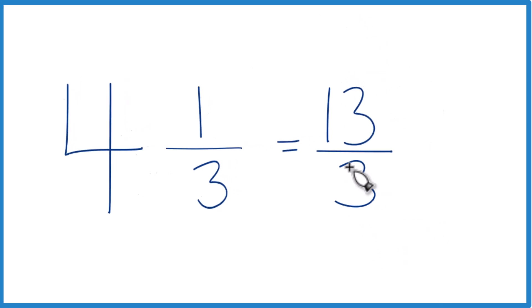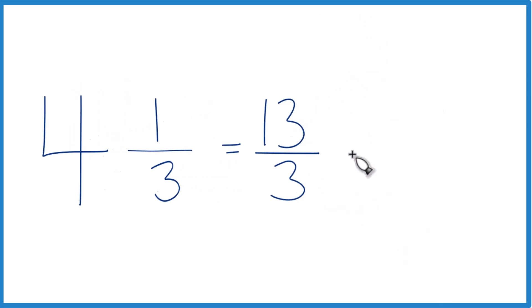You can even check your work because 3 goes into 13. 3 times 4, that's 12. And then we'd have 1 left over. Bring the 3 across, we get 4 and 1 third. That's what we started with, so we know we did this correctly.